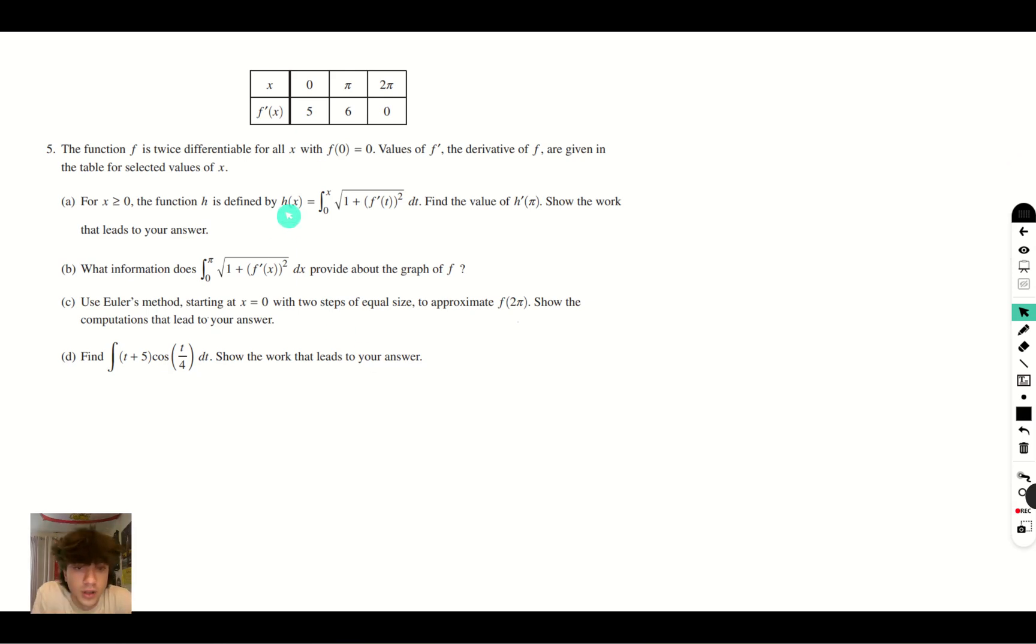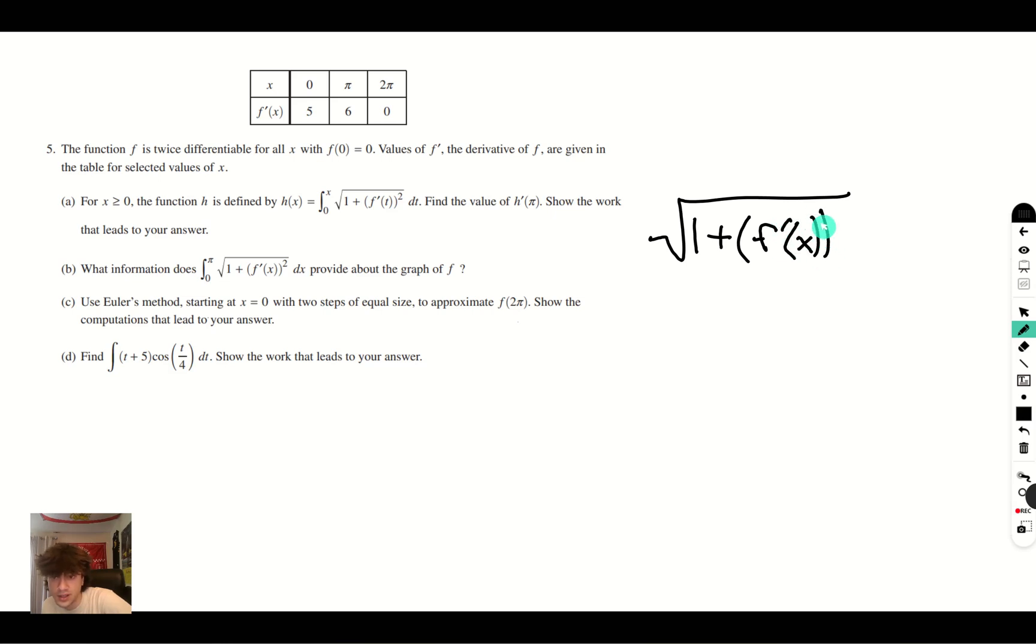So in order for us to find h prime, we know that h'(x), we're going to have to take the derivative from both sides. So in order to do that, we must use the fundamental theorem of calculus, and we swap this variable in for the t, so we'll just get rid of the integral sign, so we'll get √(1 + (f'(x))²).